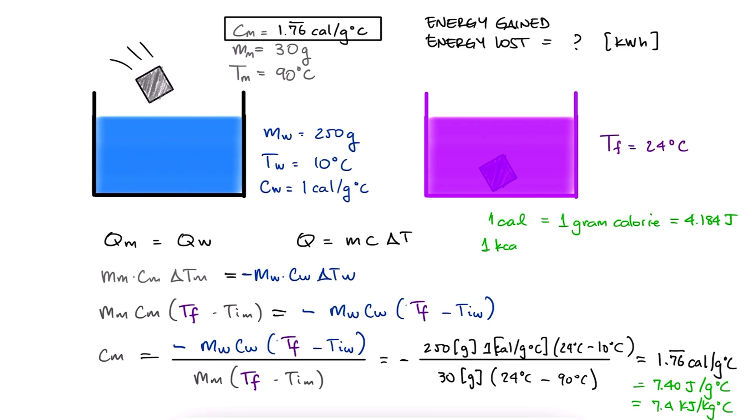Additionally, remember that a kilocalorie, kcal, or just calorie, cal, with a capital C, is 1,000 of those, meaning 4,184 joules. This is the unit we use for most food items. Therefore, we can write the specific heat as 1.76 repeating calorie per kilogram degree Celsius.